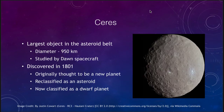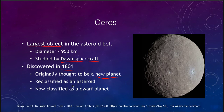Ceres is the largest object in the asteroid belt and the only dwarf planet there. It was studied by the Dawn spacecraft. Originally discovered in 1801 while looking for an object between Mars and Jupiter, it was first thought to be a new planet, then reclassified as an asteroid as more large objects were found in the belt, and has now been reclassified again as a dwarf planet, as imaged here by Dawn.